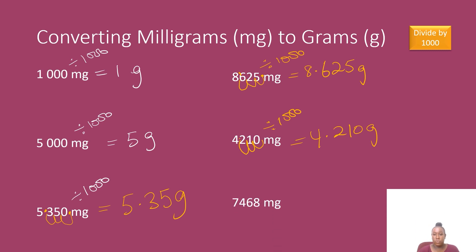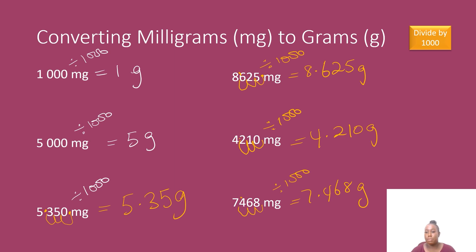Let's do one more — I have 7468 milligrams and I'd like to change it to grams. I have to divide by one thousand, so I'll shift my decimal point three times to the left. I am getting 7.468 grams. And this is it for converting milligrams to grams.